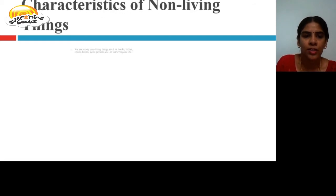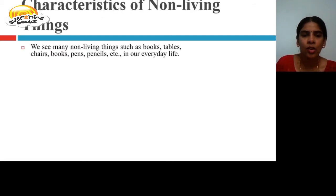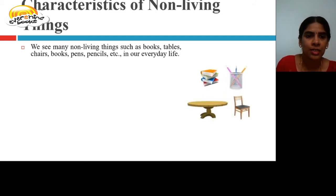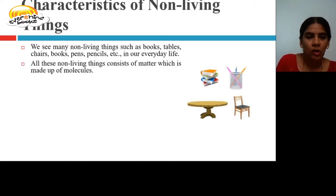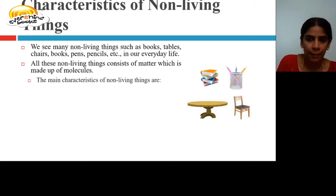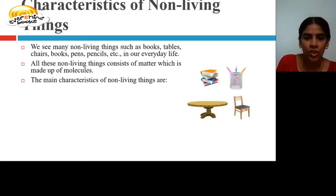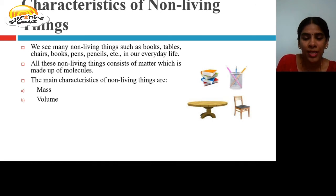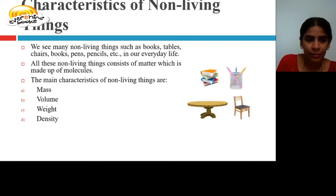Characteristics of Non-living Things. We see many non-living things such as books, tables, chairs, pens, and pencils in our everyday life. All these consist of matter which is made up of molecules. The main characteristics of non-living things include: they possess mass, they occupy volume (space), and they possess density, which is mass divided by volume.